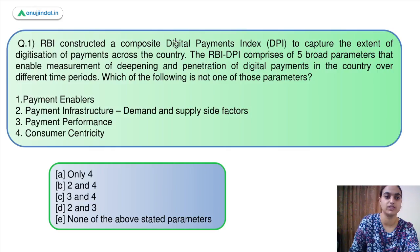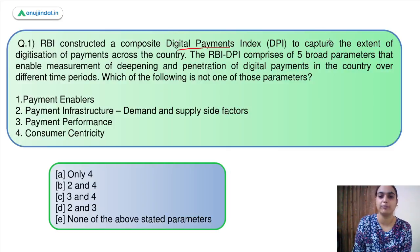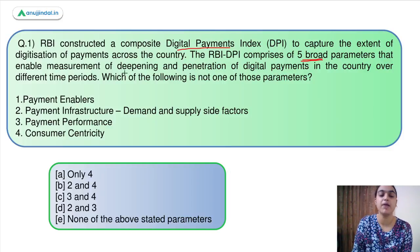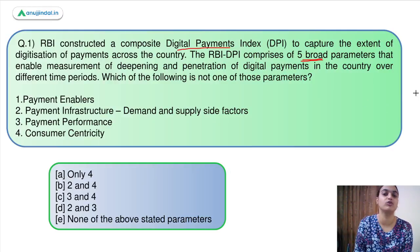Let's move on to question number 1, which says: RBI constructed a composite digital payment index to capture the extent of digitization of payments across the country. This index comprises 5 broad parameters which enable the measurement of the deepening and penetration of digital payments in the country. Which of the following is not one of those parameters?